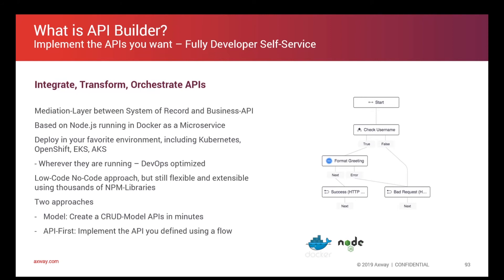API Builder supports two different approaches. The first is the model approach: if you have a model like a person stored in a database and you want an API to read, update, or delete that person, you can take the model approach and have a full CRUD API within minutes.